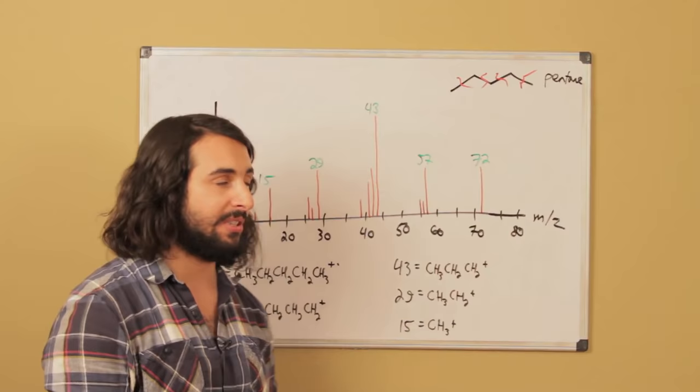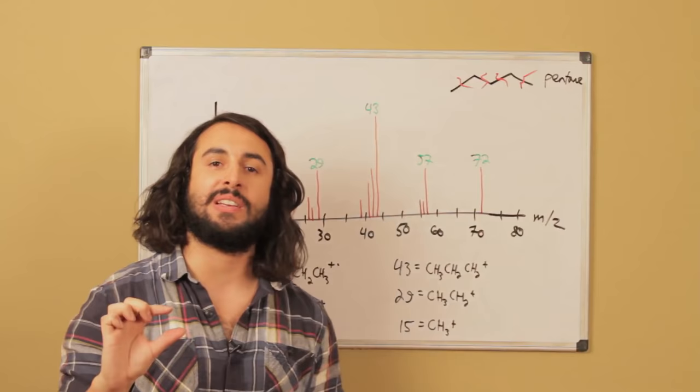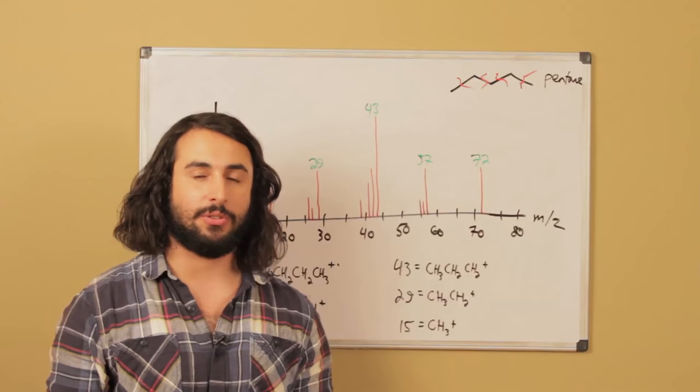That might give us a mass to charge ratio that's slightly different. Those will usually be smaller peaks because by far the most abundant carbon is carbon 12, by far the most abundant hydrogen is hydrogen 1, so we're not going to see too much of that other data, but it is there and that's why we see it.